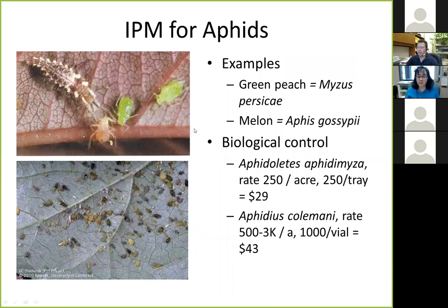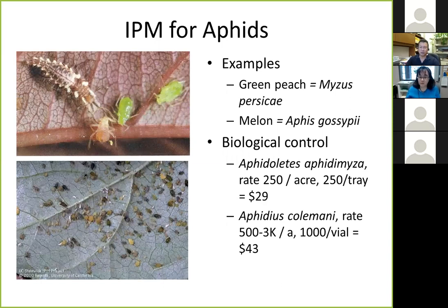For aphid IPM, rely on sanitation: start with clean plants, check around your high tunnel, monitor plants regularly, and use historical data to anticipate when aphids typically appear. Biological control is an option, but very critical: many beneficial insects are highly specific to a particular aphid species. You must be 100% certain which aphid species you have before engaging in biological control — using the wrong identification wastes money because the natural enemies simply won't perform.